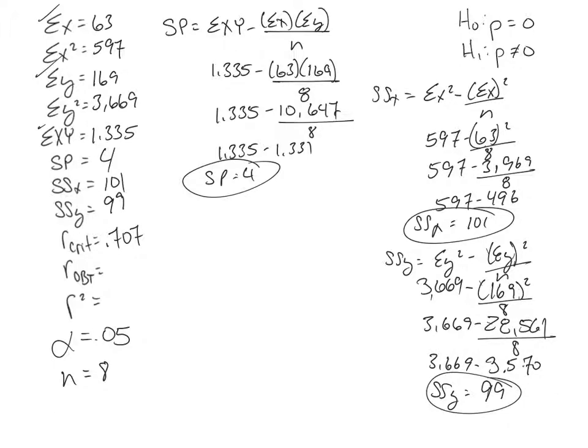Okay, so I have all my bits, right, because R obtained equals SP divided by the square root of, all right, the sum of squares X times the sum of squares Y, right, and divide that.